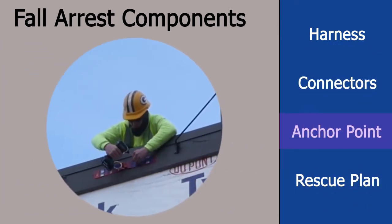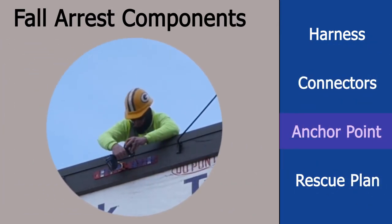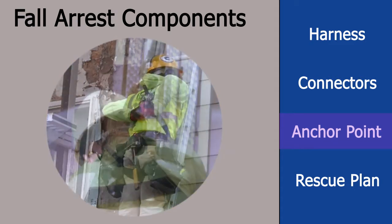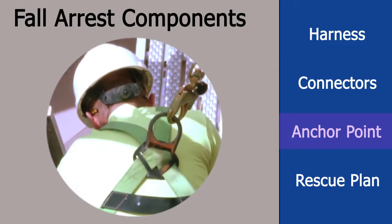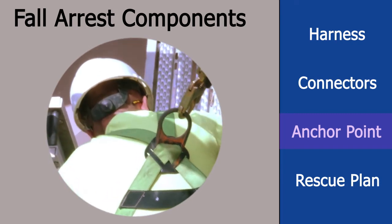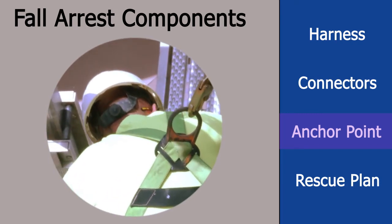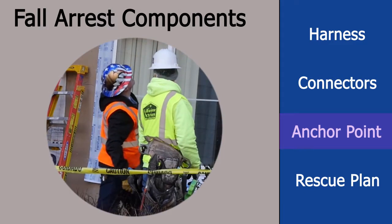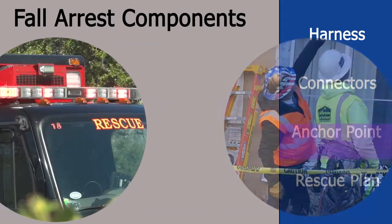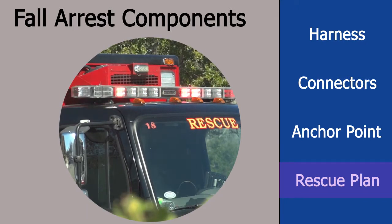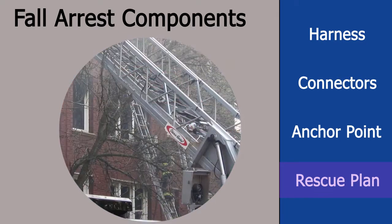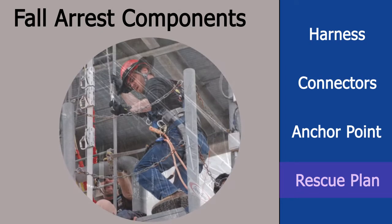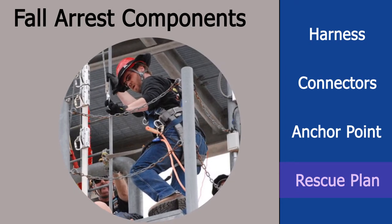The personal fall arrest system must be connected to an anchor point. Anchor points must be able to support at least 5,000 pounds per employee attached — roughly the weight of a pickup truck for each employee. Anchor points must be designated by a qualified person. The employer must provide for prompt rescue in the event of a fall, or must ensure that employees are able to rescue themselves.